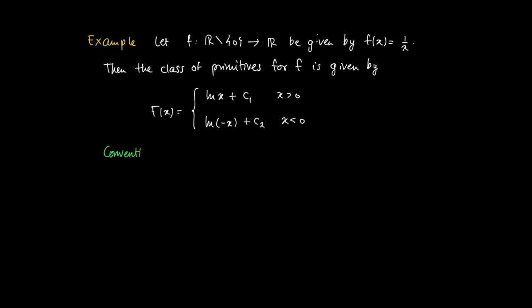So again, we use the convention to write the class of primitives for the function f as ln|x| plus a generic constant c.